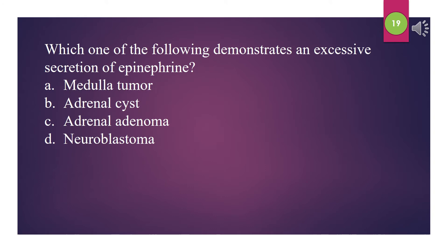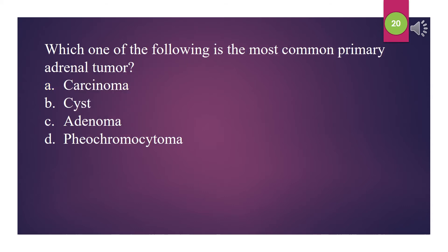Which one of the following demonstrates an excessive secretion of epinephrine? A. Medulla tumor. B. Adrenal cyst. C. Adrenal adenoma. D. Neuroblastoma. The answer is A: Medulla tumor. Which one of the following is the most common primary adrenal tumor? A. Carcinoma. B. Cyst. C. Adenoma. D. Pheochromocytoma. The answer is C: Adenoma.